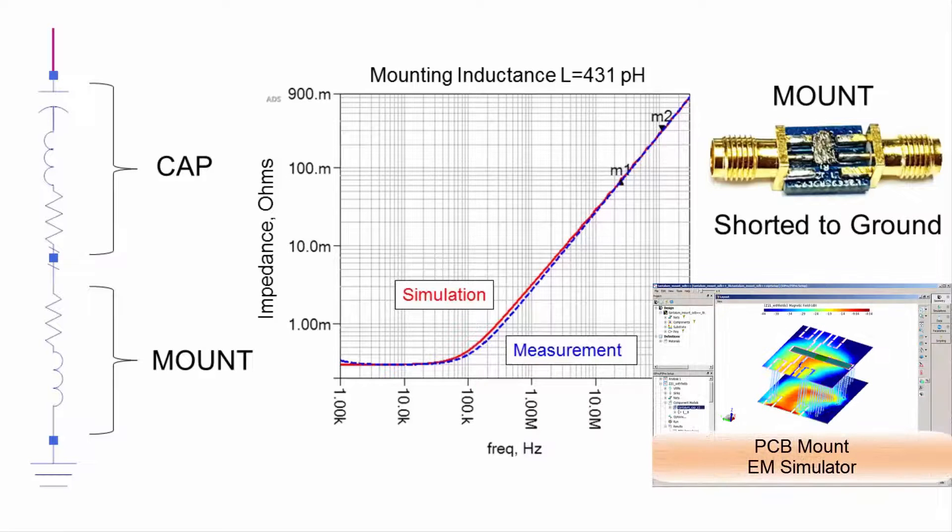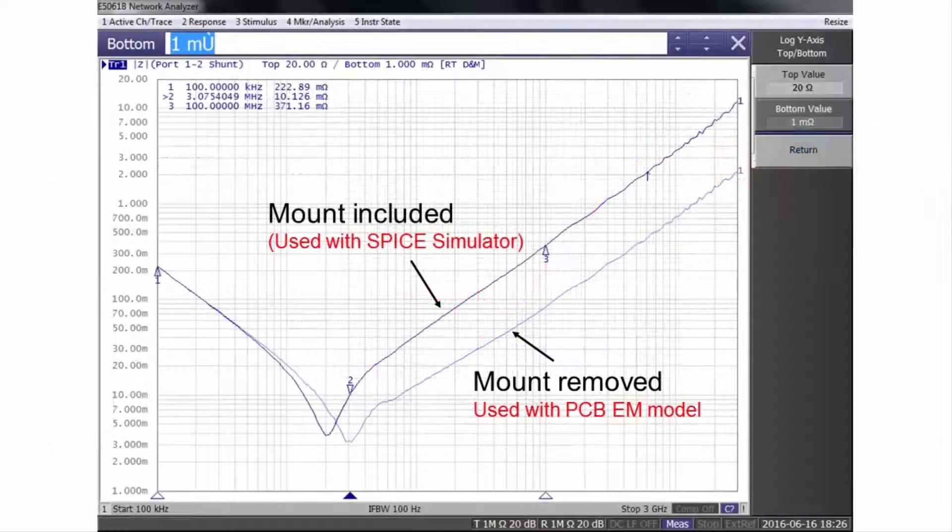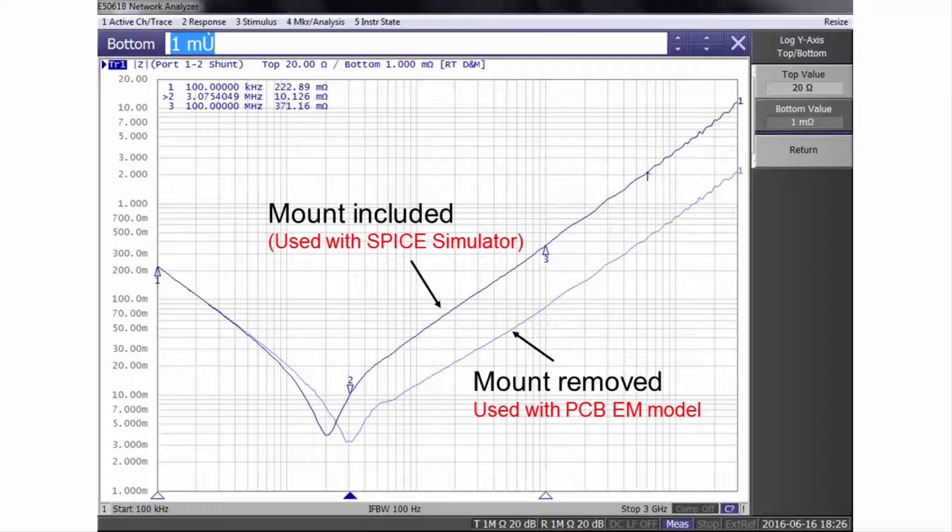The mount can be determined either by simulation or by measurement. In either case, the component pads are shorted. The mount has to be removed for printed circuit board simulation because the EM simulator will automatically account for it. And if we include it in the model also, then it would be included twice.